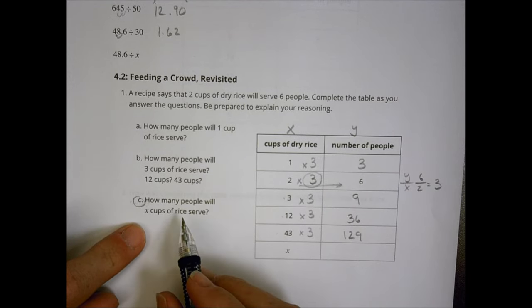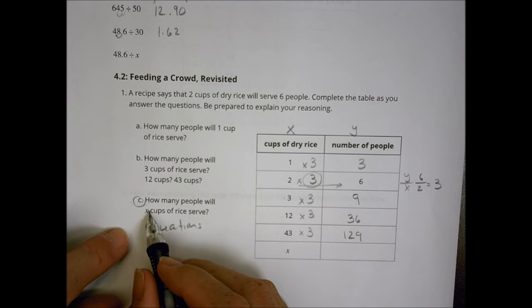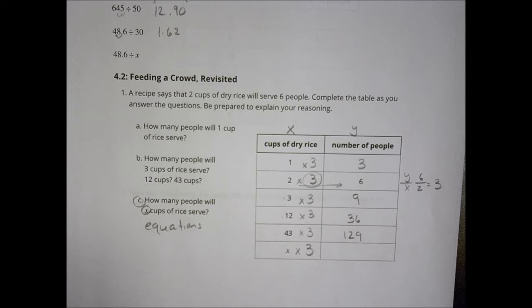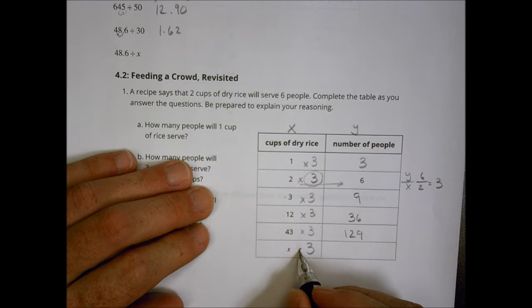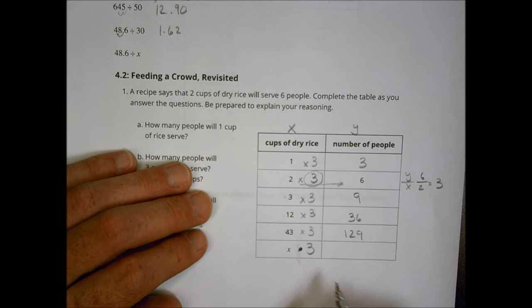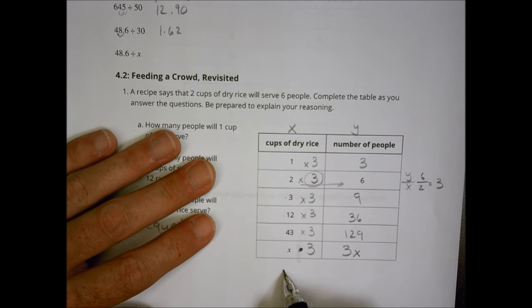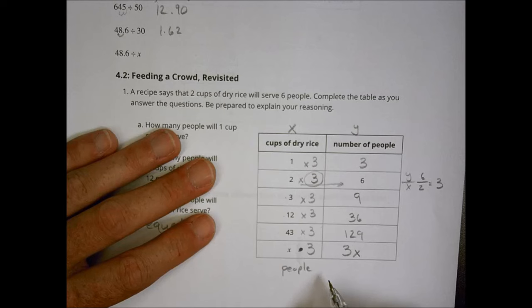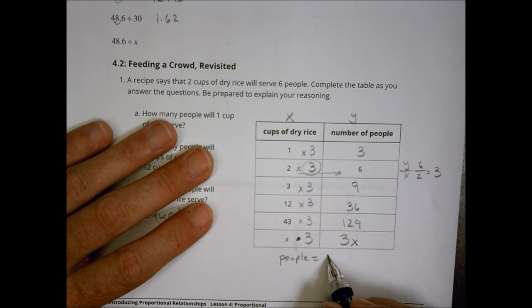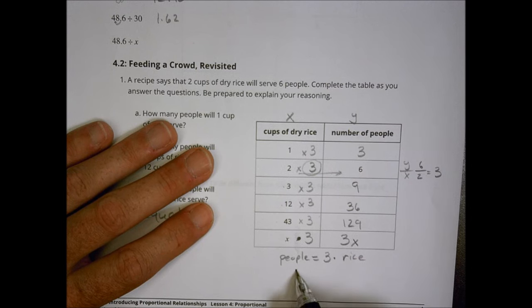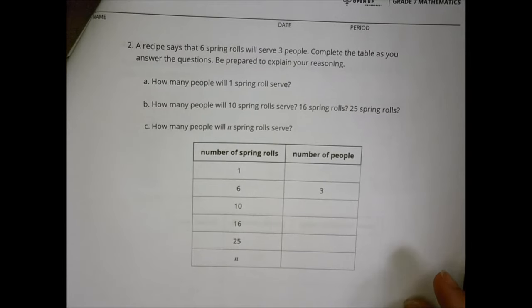The final question here is how many people will X cups of rice serve? And again, our lesson today is about equations, right? With the equations, what we tend to find is that we have values that are unknown or left as a variable. So this becomes X times three. You can see why we tend to write our multiplication signs as this little dot here, because otherwise I get X X three. So X times three, which can be rewritten as three X. That's our Y equals K times the X value. That's the equation.